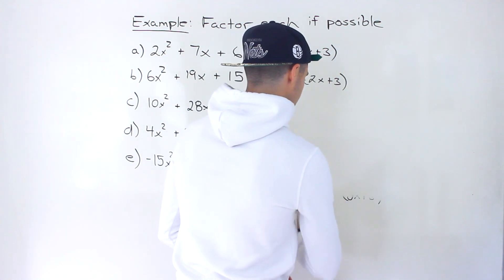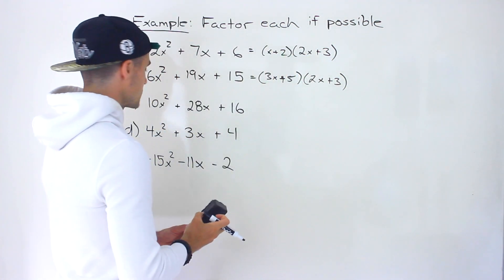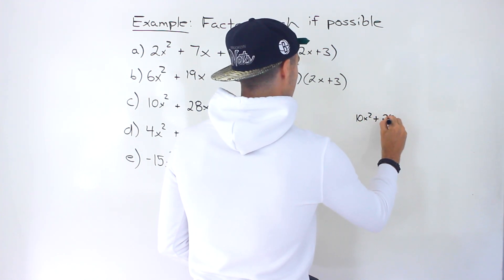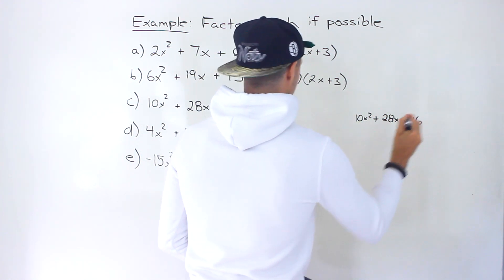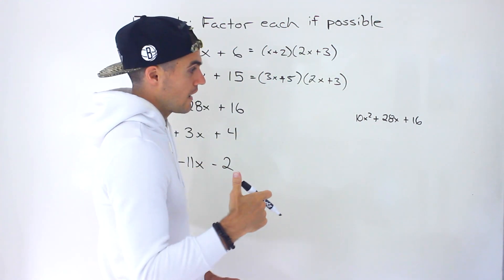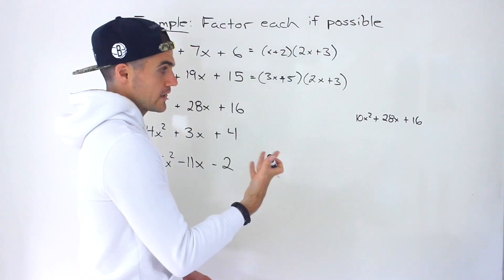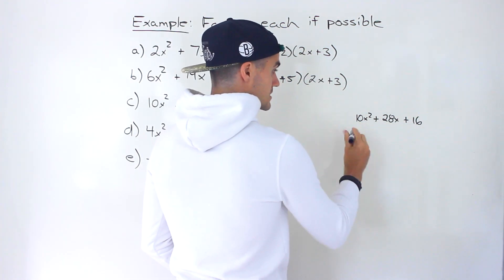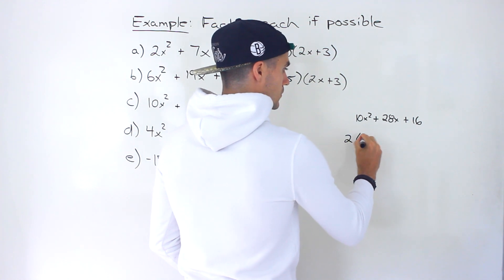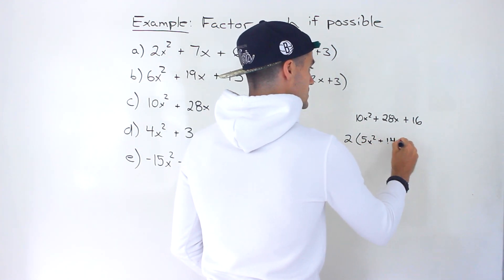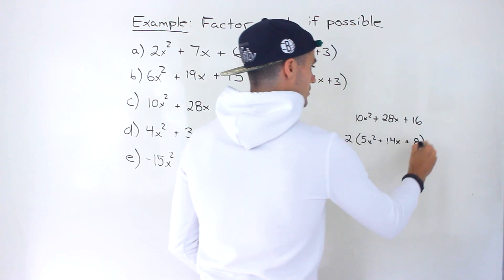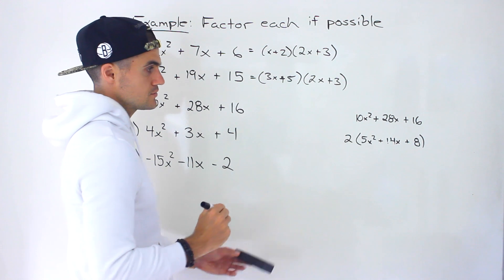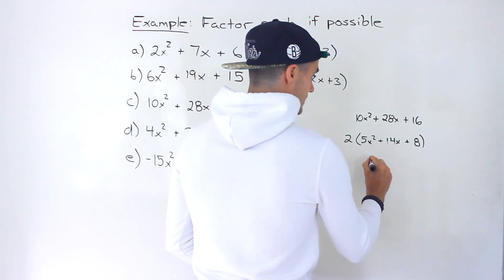Moving on to part C. We got 10x² + 28x + 16. First thing we always check for is greatest common factor. Notice in this case we can take out a 2 from all of these. 2 goes into 10, 28, and 16. If we take out a 2, we'd be left with 5x² + 14x + 8. Now what we can do, we took the 2 out, let's work with this bracket separately. Let's work with this quadratic separately.